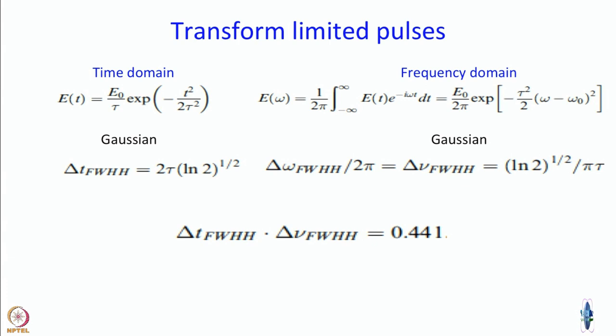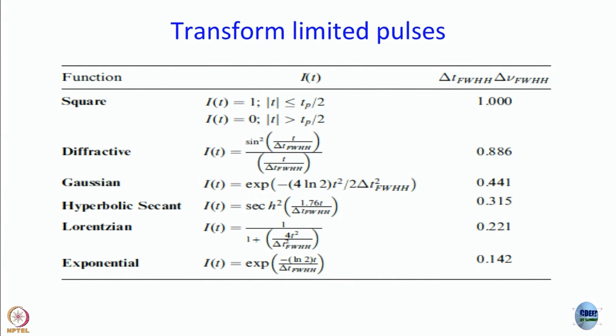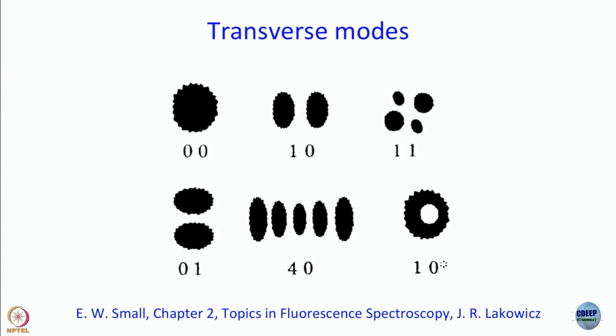The best case scenario you can get is when you have transform limited pulses. The product of pulse width, full width half maximum, and full width half maximum of the spectrum turns out to be a constant, which is 0.441 for Gaussian pulses and different numbers for pulses of different shapes. But remember, this is the best case scenario. Just because you have a certain bandwidth doesn't necessarily mean you have a pulse width as small as you really want. You really have to have good alignment to achieve transform limited pulses.